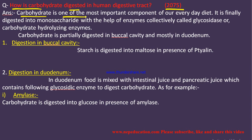Carbohydrate is one of the most important components of our everyday diet. It is finally digested into monosaccharides. Whether it is a polysaccharide or disaccharide, it is broken down into monosaccharides with the help of enzymes. Between two molecules of sugar or carbohydrate, there is a glycosidic bond.